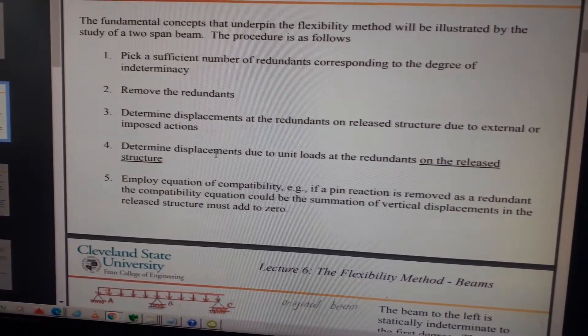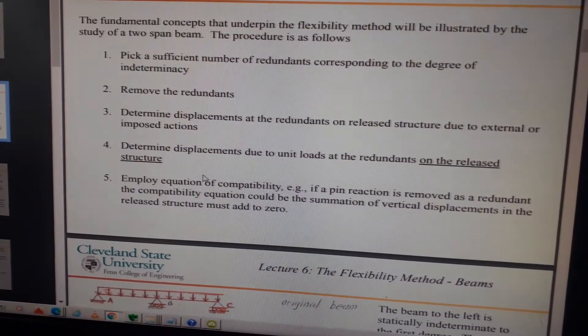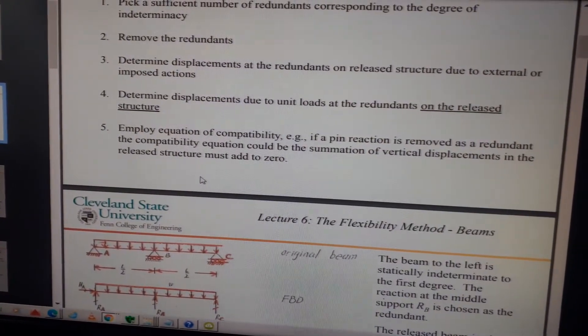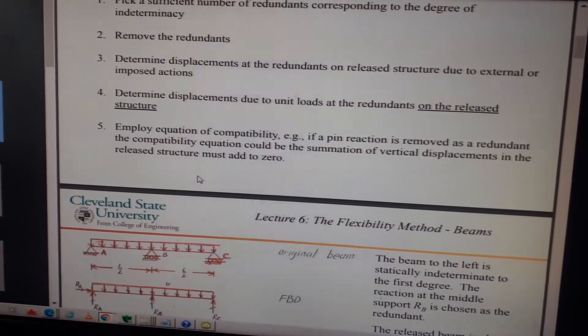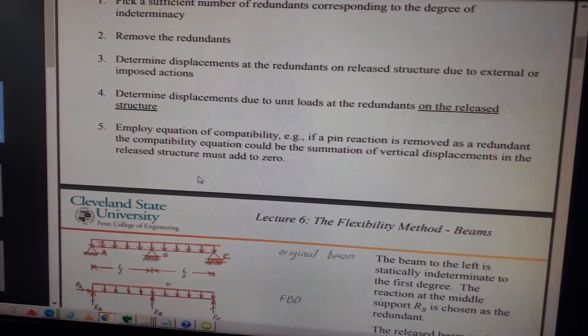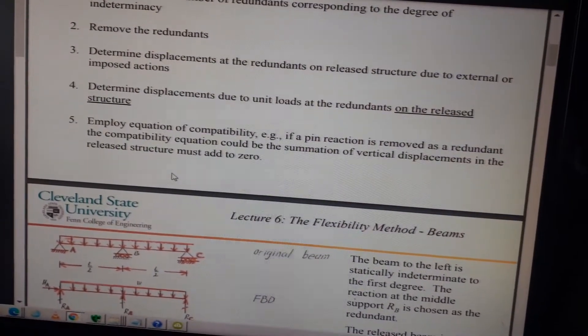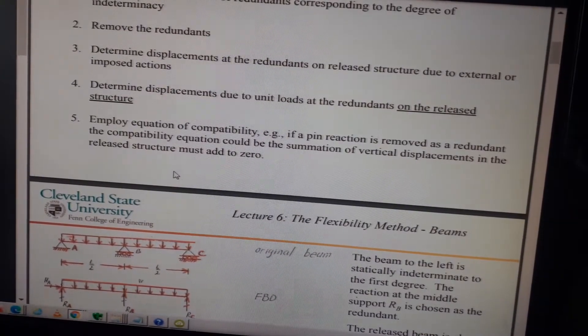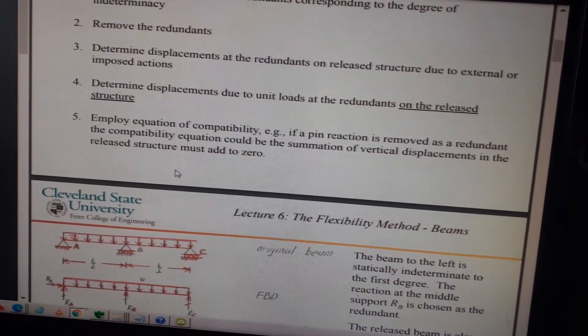Two, remove the redundance. Three, determine displacements at the redundance and release structure due to external or imposed actions. Four, determine displacements due to unit loads at the redundance on the released structure. Five, employ equation of compatibility - for example, if a pin reaction is removed as a redundant, the compatibility equation could be the summation of vertical displacements in the released structure must add to zero.